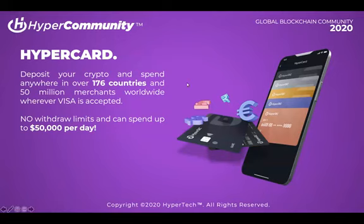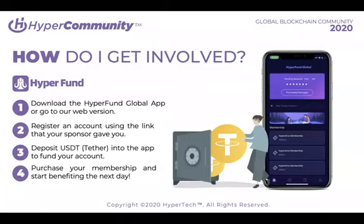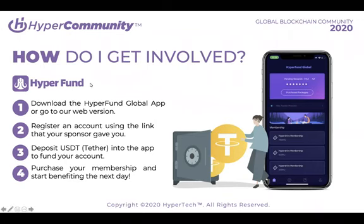The next question is how do you get involved? It's incredibly simple. You can learn about crypto, learn about blockchain, get educated as you go, analyze the market, look at opportunities. But getting started is as easy as registering an account, depositing some crypto, and purchasing your membership for as little as $300. From there, you start benefiting the next day — you're in, you're a member, and that's that.